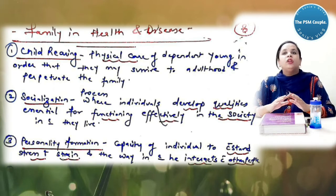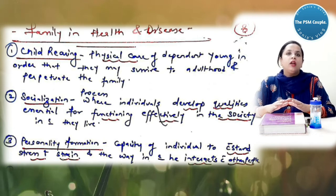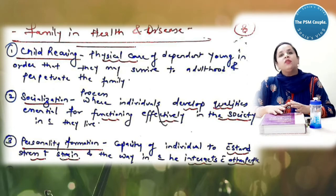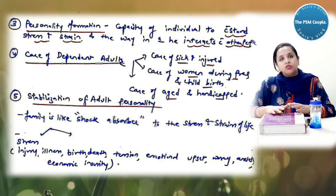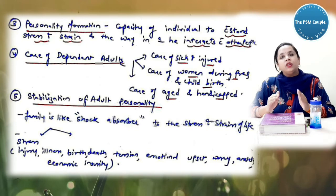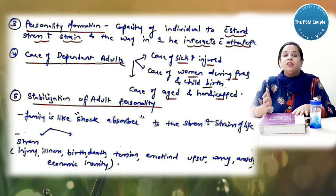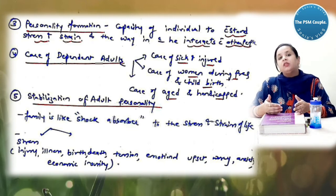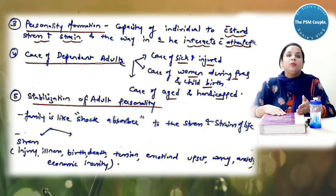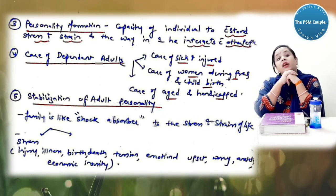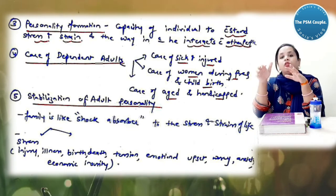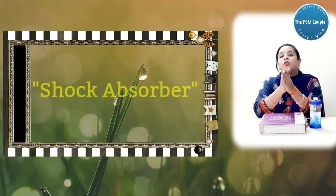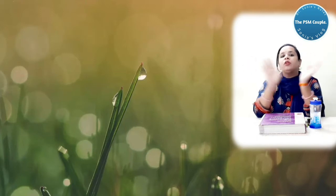Now what are the family in health and disease? Child rearing: physical care of the dependent young. Socialization: the process where the individual develops qualities essential for functioning effectively in the society. Personality formation: capacity of the individual to withstand stress and strain. Whenever you have problems, your family stands with you. Care of the dependent adults: those who are sick, the elderly people, the women, the children who are not working. Stabilization of adult personality: your family acts as your shock absorber. Something will happen, bad or good, first thing you are going to tell to your family because you know they are the shock absorber. They can tolerate your each kind of happiness as well as your stress. No other member of the society will do so. So family is like a shock absorber to the stress and strains of life.